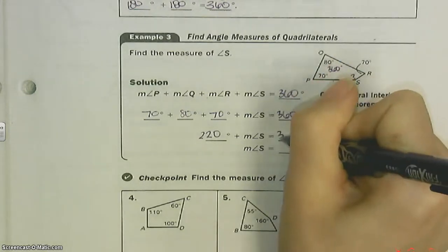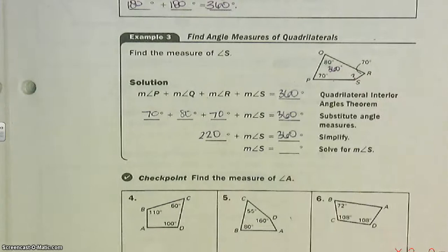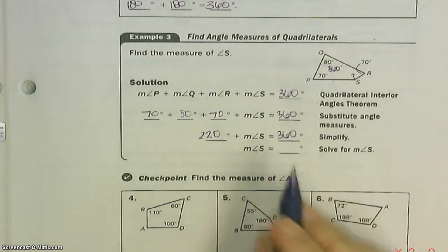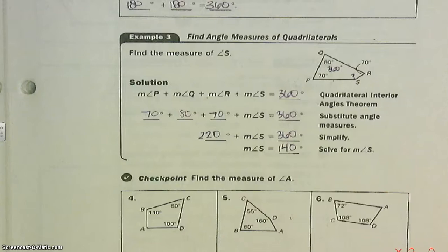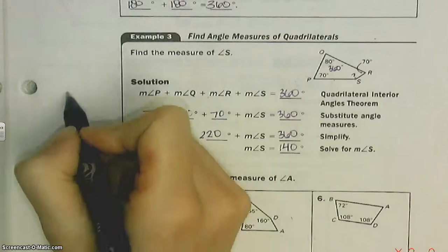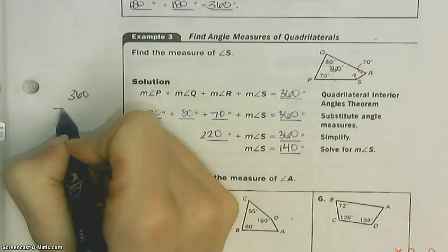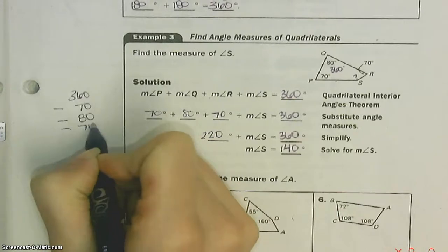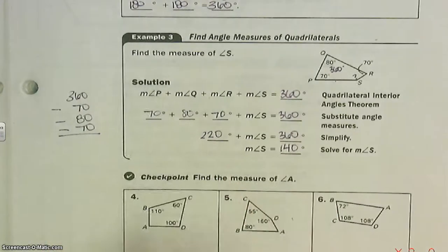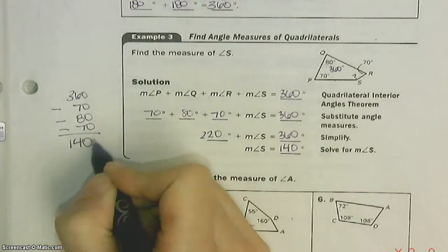So if I need to get to 360, how much do I need? I subtract 220 from this, I get 140 degrees. Right—if you want, in your calculator, you just take 360, subtract 70, subtract 80, subtract 70, and you get 140 degrees.